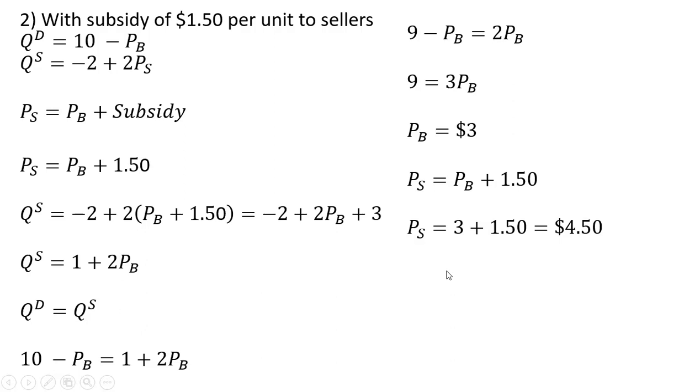The overall equilibrium quantity now in this market—taking this supply equation over here and plugging $3 into it, the price that buyers pay—the equilibrium quantity will be 7 units.